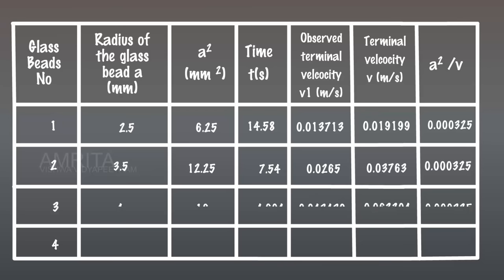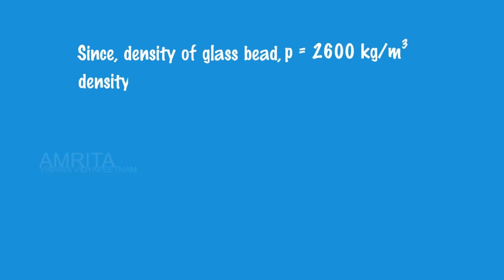Repeat the experiment with beads of diameters 8 mm and 9 mm and record the values. The density of the liquid σ is 1260 kg/m³ and the density of the glass bead ρ is 2600 kg/m³.